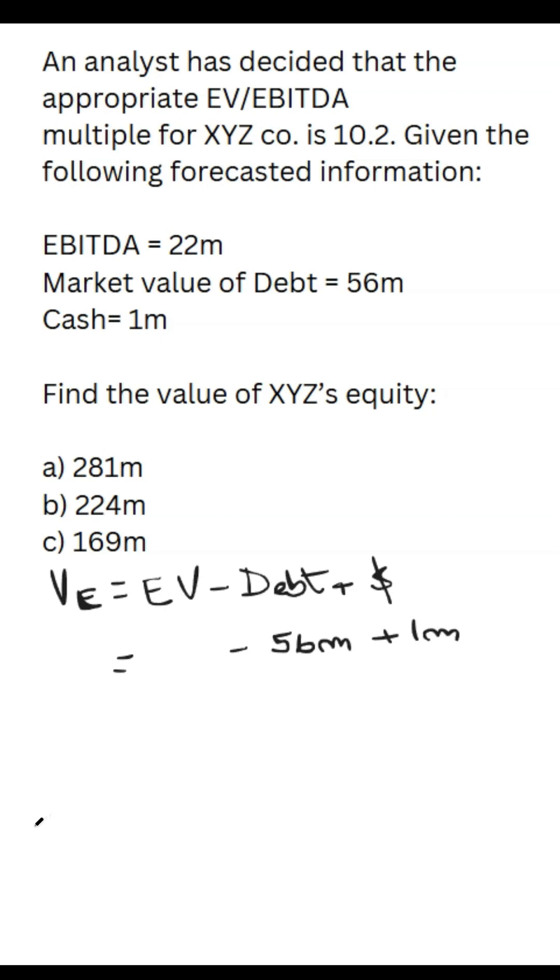So the only thing left to find is the enterprise value. And although the question doesn't give us the enterprise value, we can find it because we have the EV/EBITDA multiple. If we multiply this multiple by the EBITDA, which we have, we are left with the enterprise value, because these two cancel out.